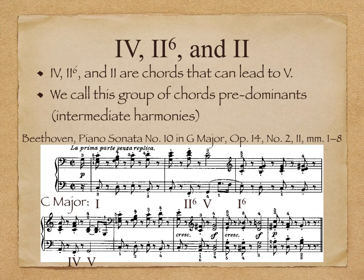These three chords are chords that can lead to 5. We call this group of chords predominant because they come before the dominant, or 5. They are sometimes also called intermediate harmonies. This group of chords is an important and colorful group which you will study at length over the next few semesters.